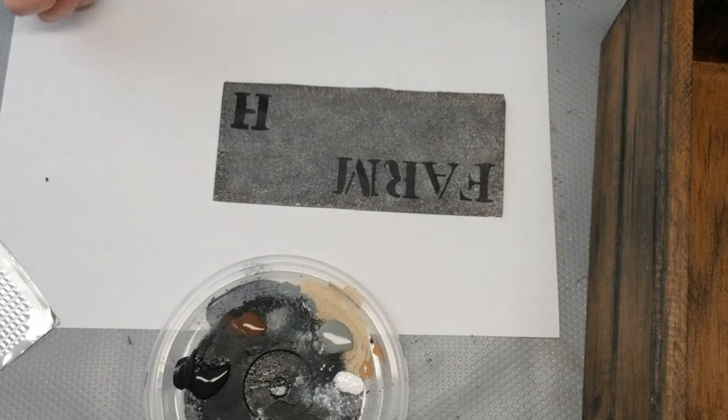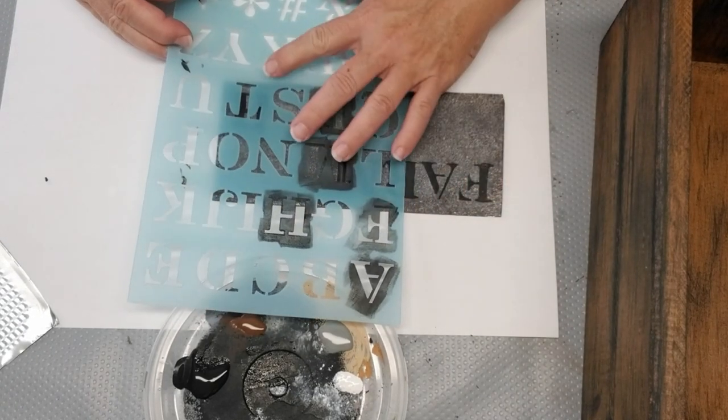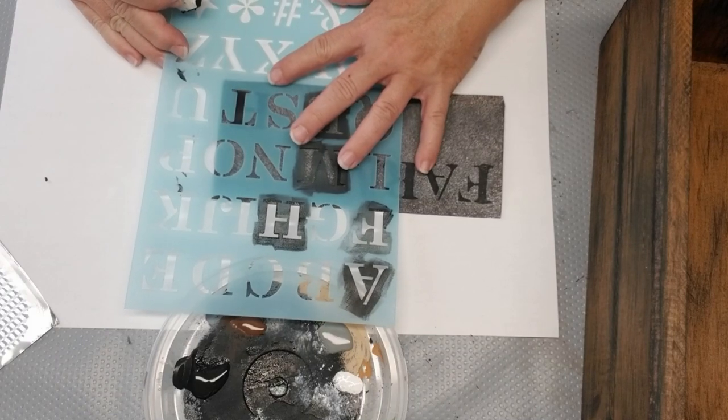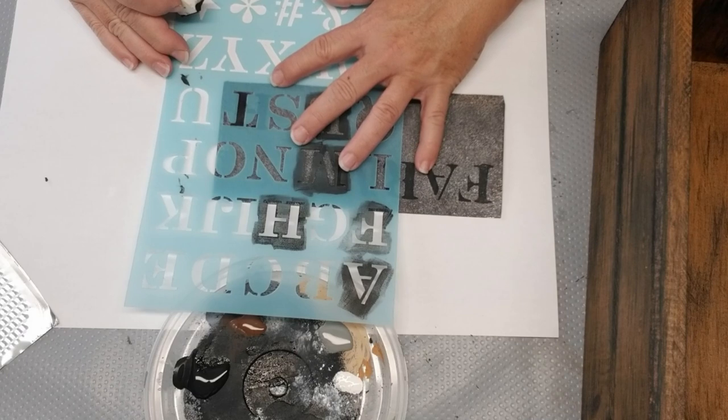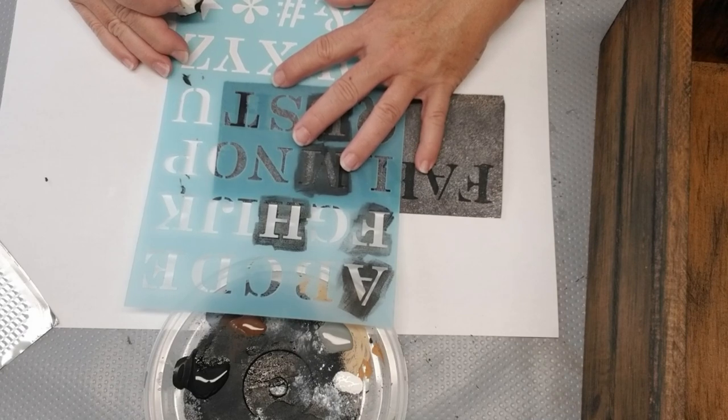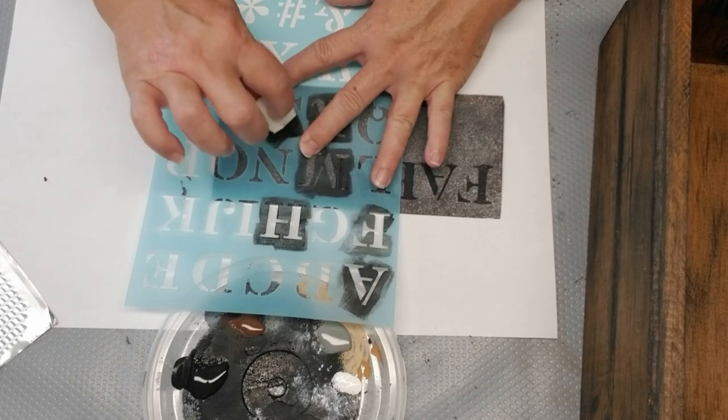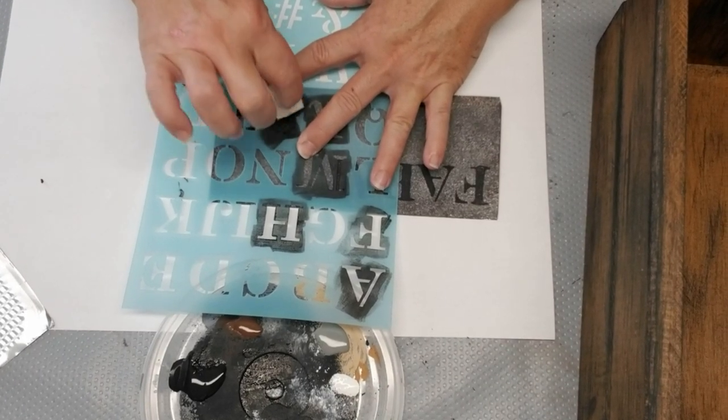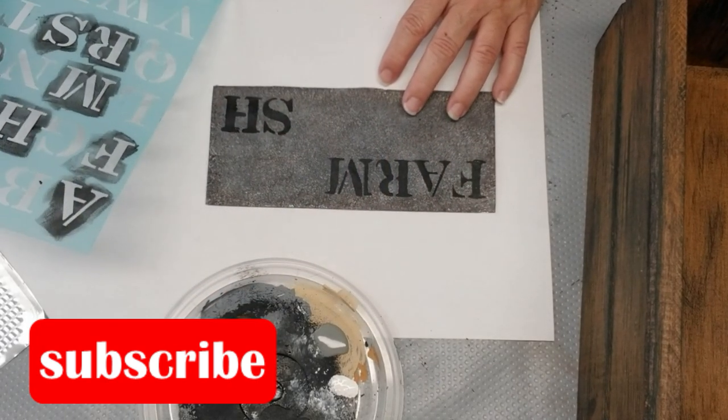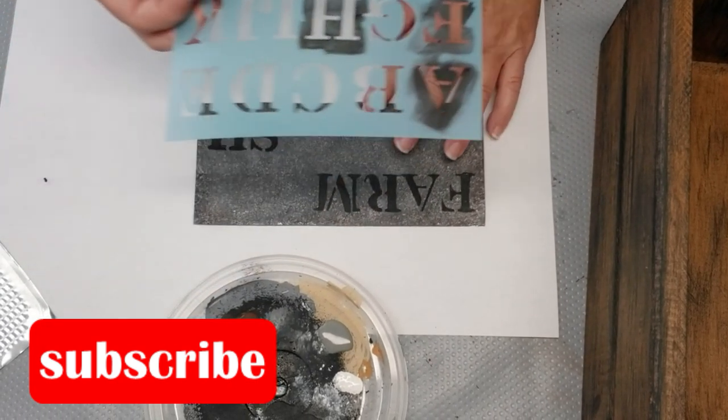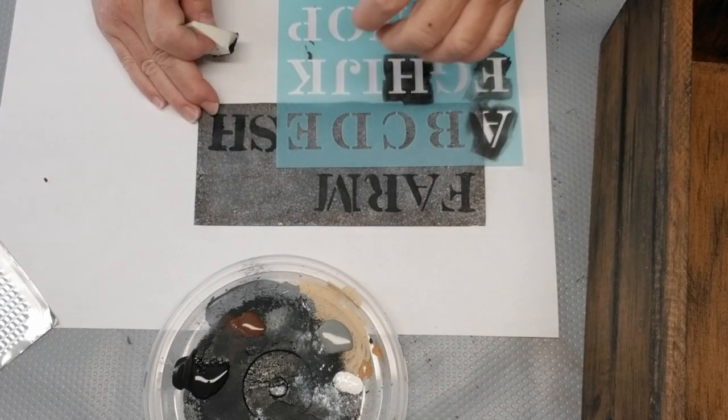I'm using a Dollar Tree makeup sponge and some black acrylic paint to apply the stencil. Now you'll see here at the bottom that I've started with the last letter of the word Fresh because I want this to be evenly spaced. So the farm word at the top started on the left, and I'm starting the Fresh word on the right and working my way backwards. That way I know that I'm going to have enough space for all the letters.